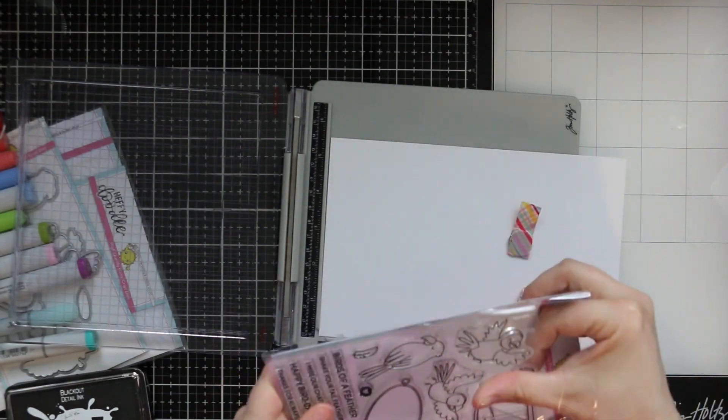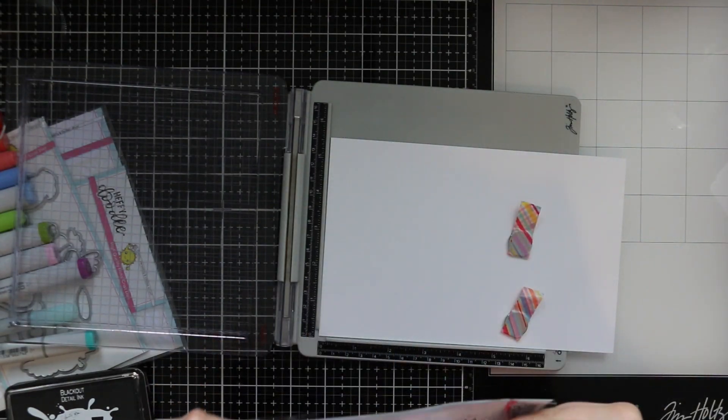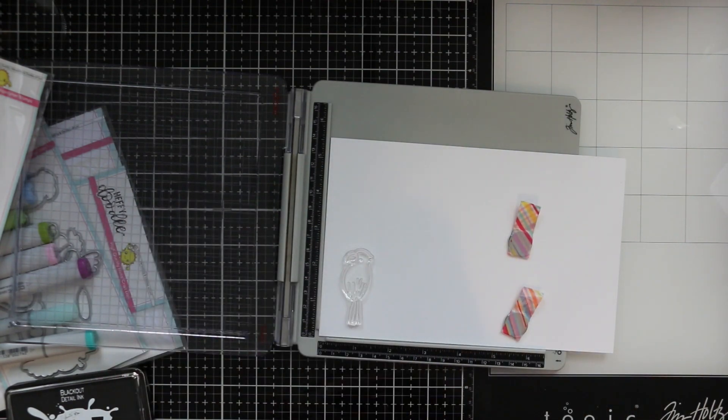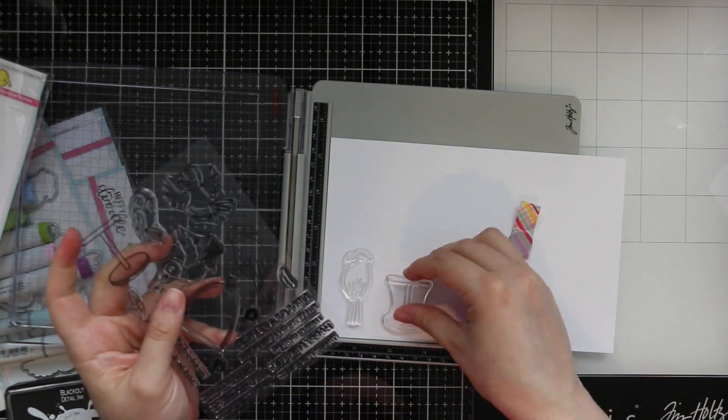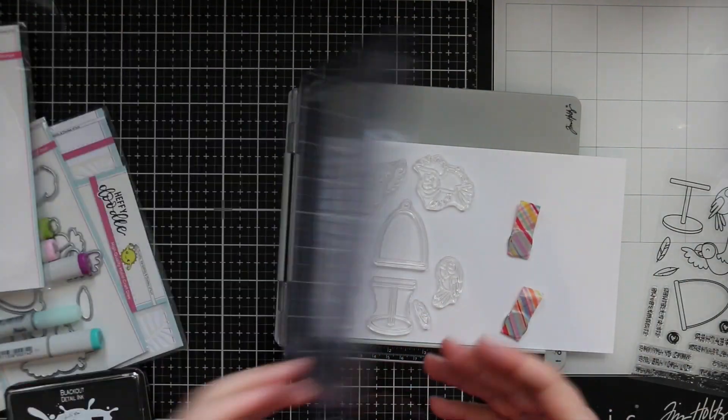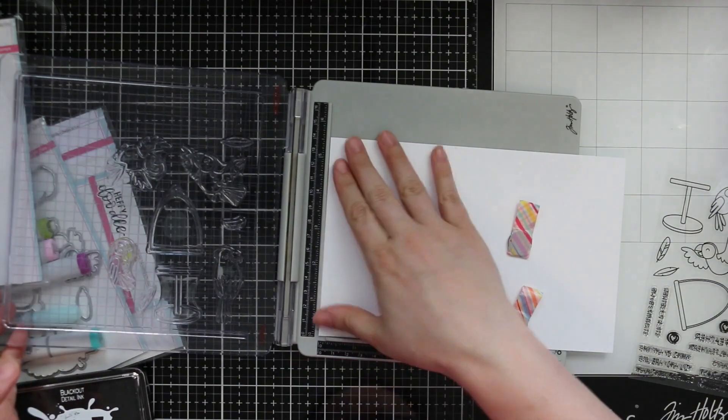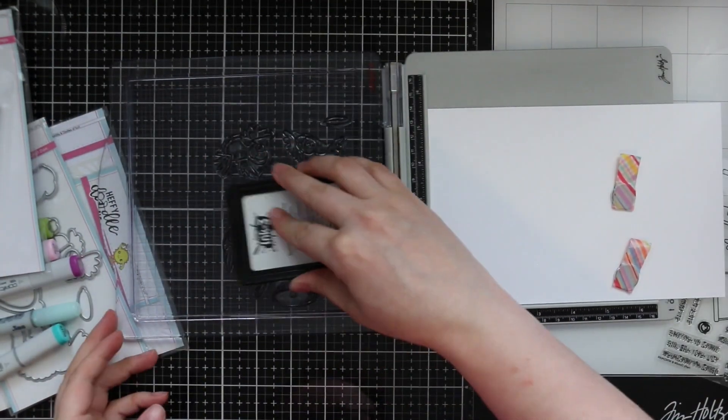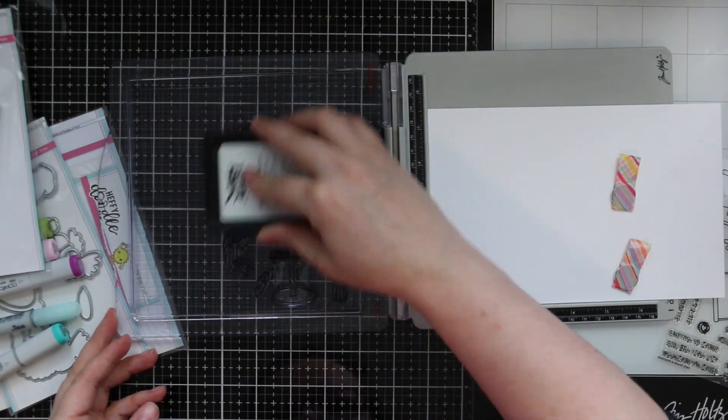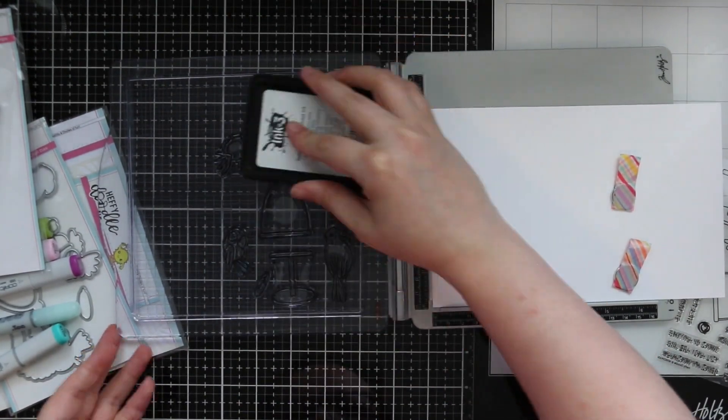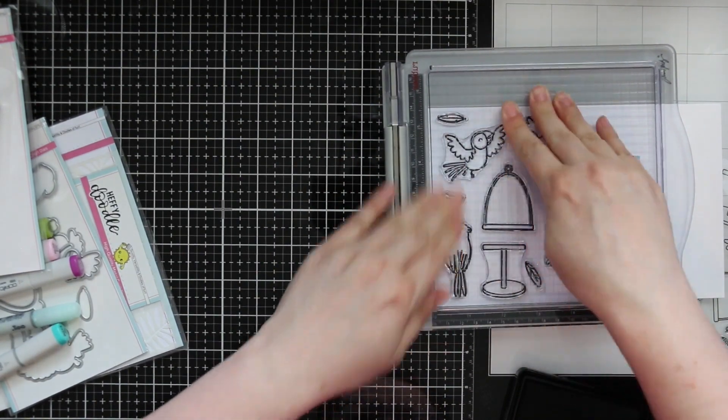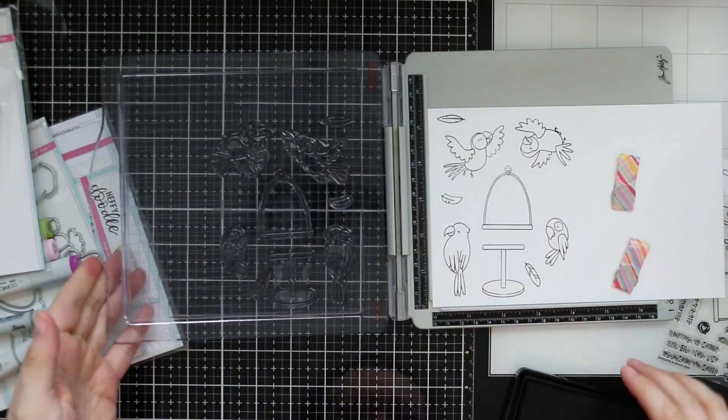This is the Wingman stamp set that they just released in June. I started off with my travel stamp platform and I have some Neenah Classic Crest 80 pound solar white cardstock. I lined up all the images and I'm stamping everything with Ink on Three's Blackout ink. Because these are brand new stamps I need to stamp them a couple times to get a good crisp black line.